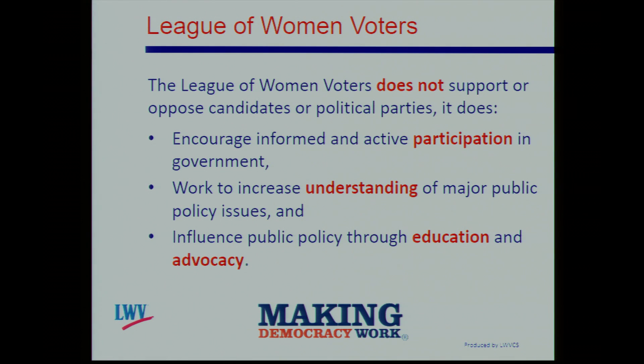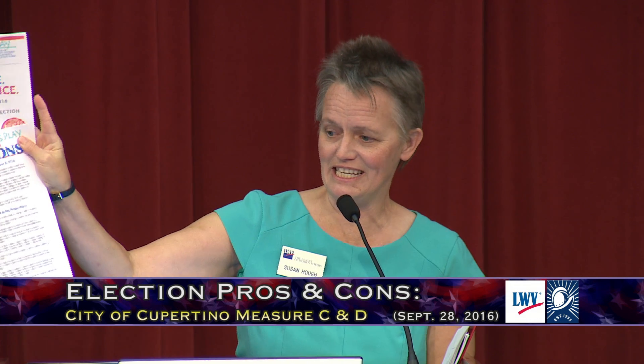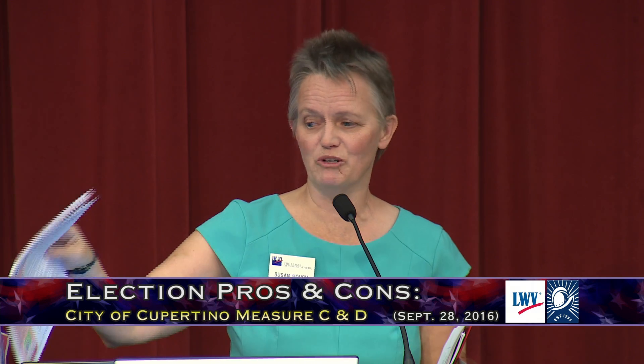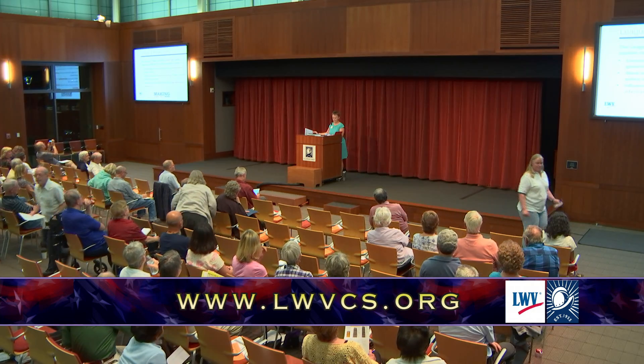There are more materials out in the lobby, including some information on the state propositions. There's the Easy Voter Guide, available for download in multiple languages, and the League's pros and cons for a more detailed analysis. One last question: how do the office, residential, and commercial allotments in Measure D compare to the allotments at Santana Row? We do not have that information.